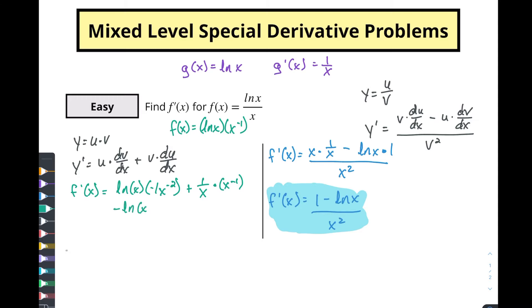Simplifying: ln(x) times negative one gives a minus ln(x) over x squared, and then 1/x times 1/x gives 1/x squared. Swapping the terms around since it's addition, we get (1 − ln(x)) / x². We can see this is indeed the same answer we got with the quotient rule. I use the product rule approach only for simple fractions like this — it's about knowing what's in your toolbox and using what makes it a little easier.